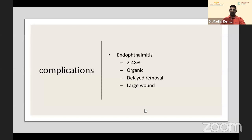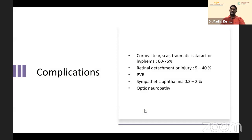Regarding complications: endophthalmitis has been reported in 2 to 48 percent of intraocular foreign bodies. Organic foreign bodies can lead to fungal infection. Delayed removal or large wounds also lead to complications. Foreign bodies should be handled as early as possible — ideally within 48 hours — before encapsulation begins or intraocular damage becomes extensive.